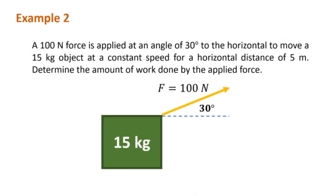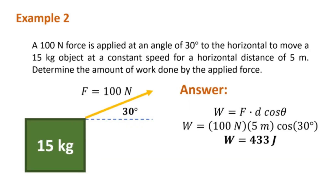A 100-newton force is applied at an angle of 30 degrees to the horizontal to move a 15-kilogram object at a constant speed for a horizontal distance of 5 meters. Determine the amount of work done by the applied force. Using our formula for work, substitute 100 for F, 5 for d, and the angle is 30 degrees, giving us a value of work of 433 joules.